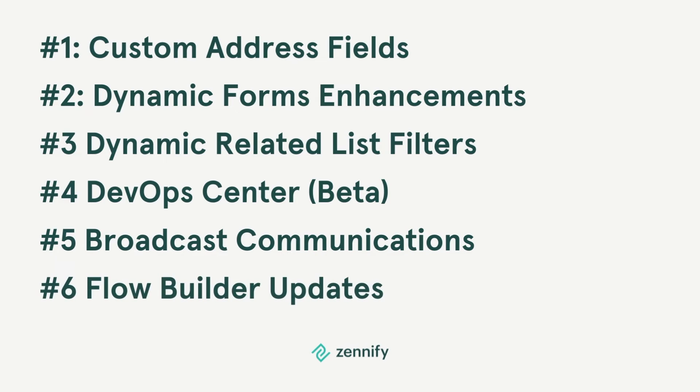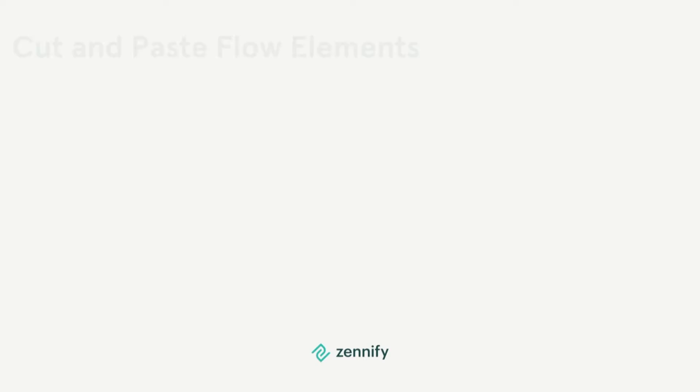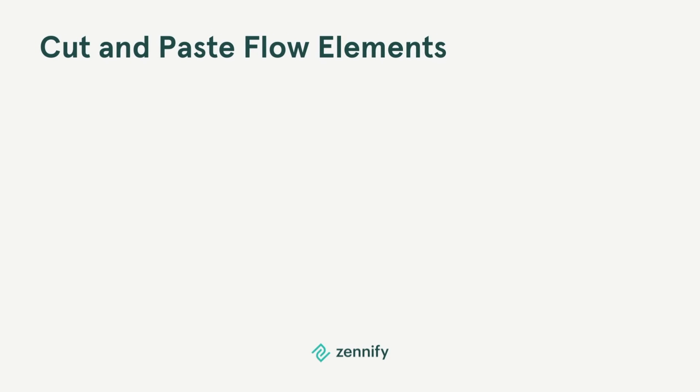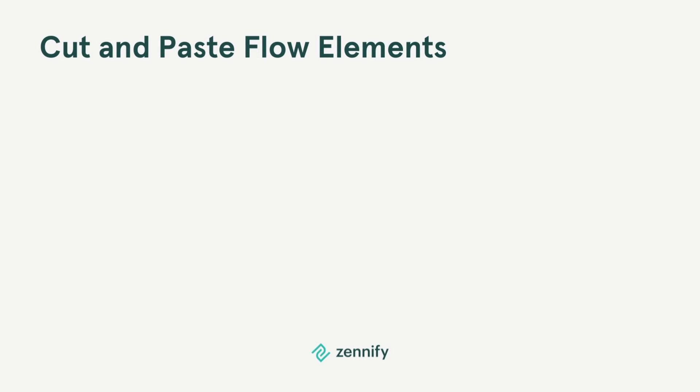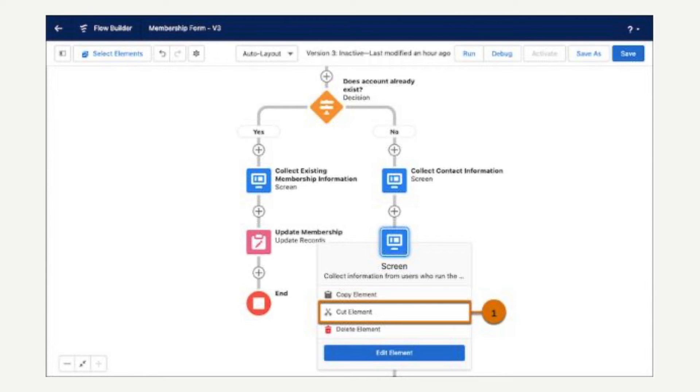Number six: Flow Builder updates. You've been hearing it for months now — Flow is the future. And it's true. This is why Salesforce is introducing lots of updates to Flow Builder. First, cut and paste flow elements. To edit the order of flow elements before this update, you were limited to copy and paste — you had to copy the element, delete the original, and update the API name of the pasted element. Now it's a more straightforward cut and paste.